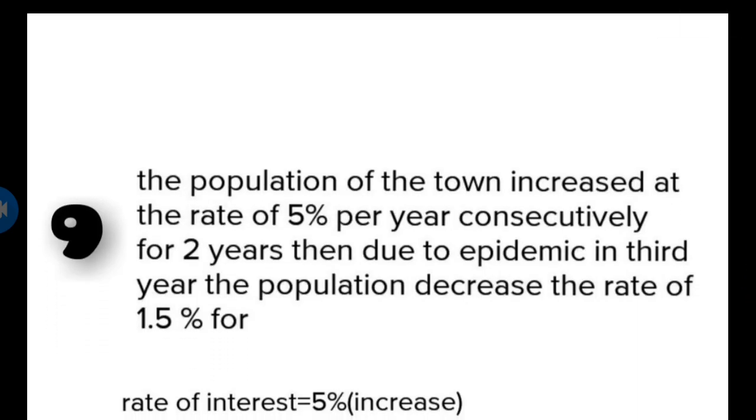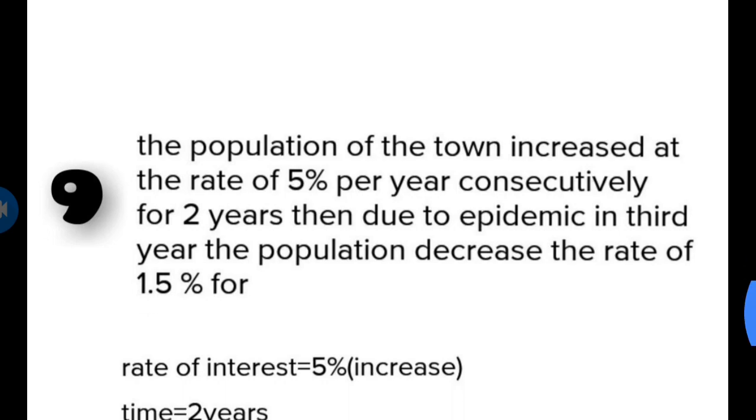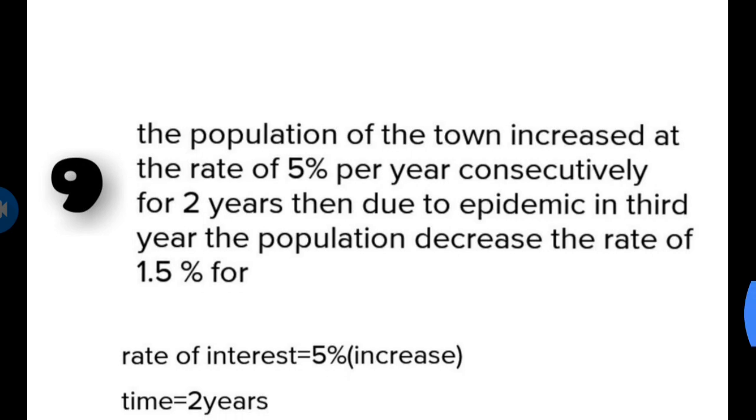The population of a town increased at the rate of 5% per year consecutively for 2 years, then due to a pandemic in the third year, the population decreased at the rate of 1.5% for the next 3 years. What is the current population if it was 2,345,000 five years ago?